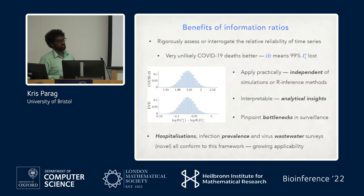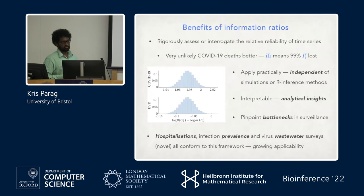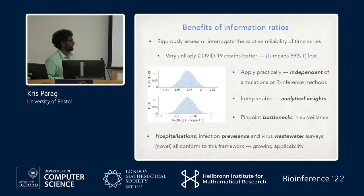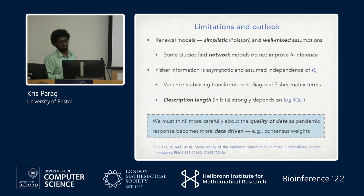This provides analytical insights and lets you pinpoint bottlenecks by identifying which geometric mean is most important. You could get an idea of where to put surveillance resources — whether to speed up reporting of cases or do more random sampling to improve reporting fractions. Many data sources, including infection prevalence surveys (like REACT studies), hospitalizations, and virus in wastewater, have been written as renewal models and could be used within this framework.